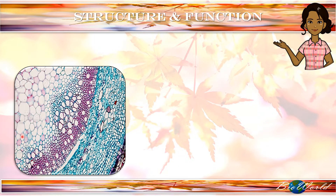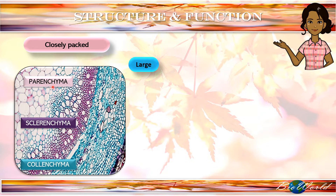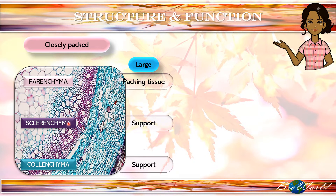Now let's have a look at how structure is related to the function of these cells. Firstly, you will notice that the parenchyma, sclerenchyma and collenchyma cells are closely packed together. Added to that, you find that the parenchyma cells are the largest of the three. So that is why parenchyma cells are very suitable as packing tissues — they are able to occupy large spaces inside the plant. The close arrangement of the sclerenchyma and collenchyma cells make them very strong, suitable for support in plants.